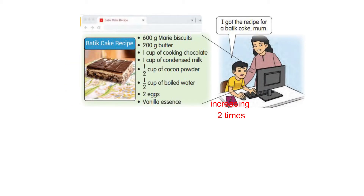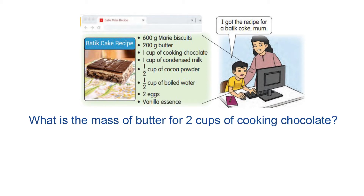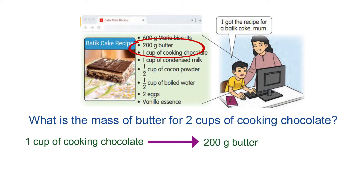Look at this example. This is the recipe for a batik cake. Anissa wants to make two batik cakes. What is the mass of butter for two cups of cooking chocolate? Look at the recipe — to bake a cake, Anissa needs one cup of cooking chocolate. For one cup of cooking chocolate, she needs to use 200 grams of butter.